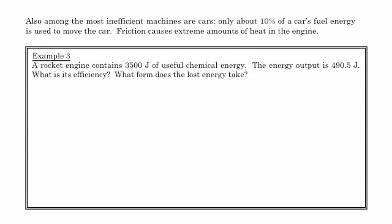And so let's take a look at an example. For example, a rocket engine contains 3,500 joules of useful chemical energy. The energy output is 490.5 joules. So what's its efficiency? So in the engine, this rocket engine is going to use 3,500 joules of energy. That's how much it's going to use. And the energy output is 490.5 joules. So that's how much energy it takes to get up to a certain height. What's the efficiency of this engine?